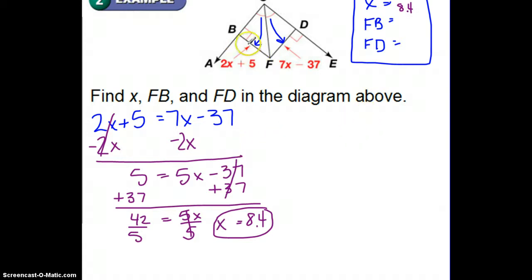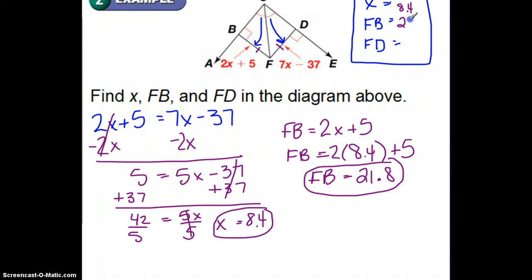Now, I need to find FB or FD. And I do know that these two happen to be equal. And if I look, it probably looks like FB is probably easier to find. So it's 2X plus 5. And I know in this one that X equals 8.4. So if I go and plug this in, 2 times 8.4 plus 5 is going to give me 21.8.